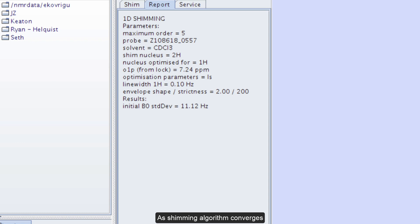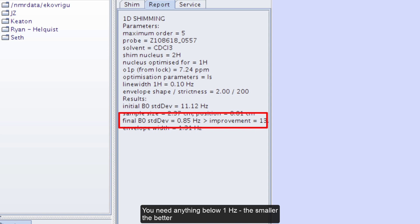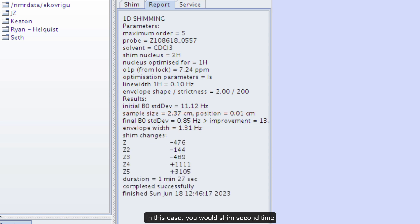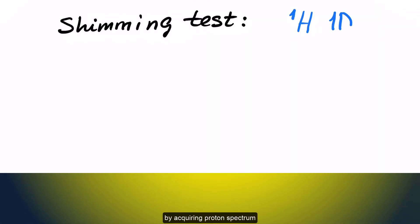As shimming algorithm converges to the best set of shim values you will see final B0 standard deviation value. You need anything below 1 Hz, the smaller the better. Sometimes with some samples we cannot get better than several Hz. In this case you would shim second time. Once the algorithm completes it outputs the final confirmation messages. The numbers that top shim outputs here are not related directly to the resolution. These are internal parameters by which top shim decides success. Quality of shimming must always be checked directly by acquiring a proton spectrum.